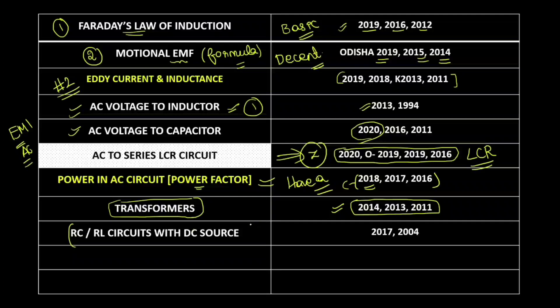Also note RC circuits and RL circuits with a DC source — not an AC source but a DC source. These can be used as well.